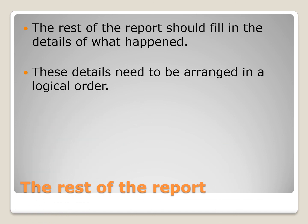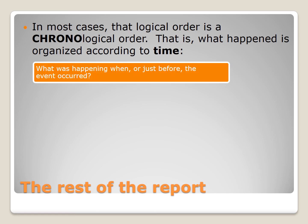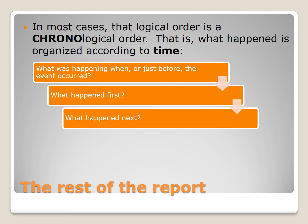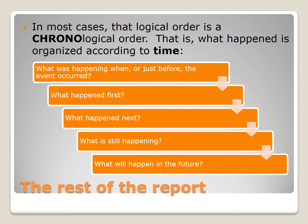These details need to be arranged in a logical order. In most cases, that logical order is a chronological order — organized according to time. So, first of all, what was happening when, or maybe even just before, the event occurred? What happened first? What happened next? And what happened after that? What is still happening? And what will happen in the future?